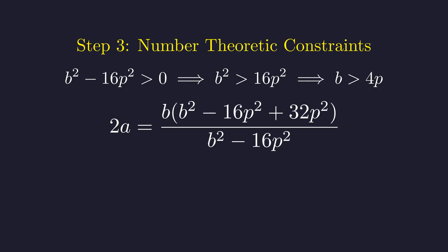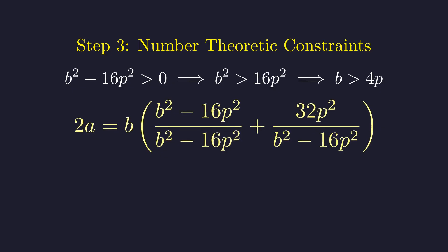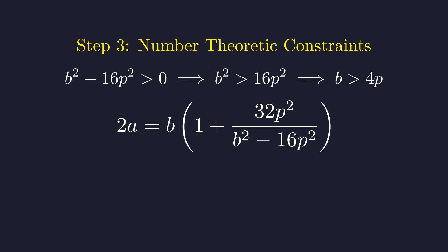For 2a to be an integer, this denominator has to divide the numerator. Let me rewrite this to make the divisibility clearer. Splitting the fraction like this separates out the integer part. Perfect. This makes it crystal clear that b squared minus 16p squared has to divide 32p squared b.